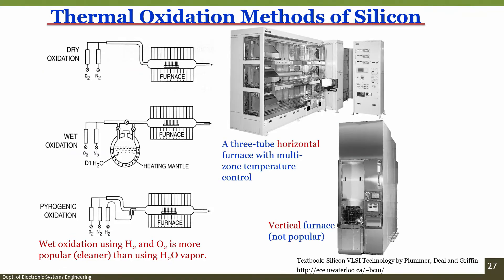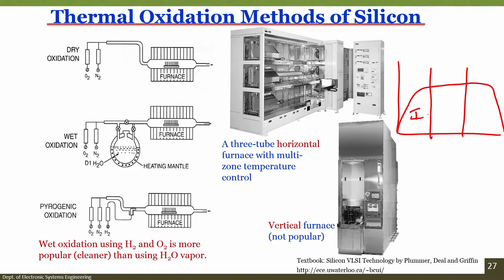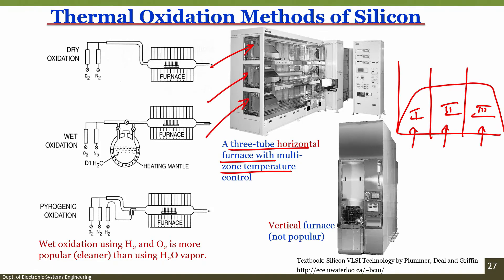The horizontal tube furnace has multiple-zone temperature control. There is a first zone, second zone, and third zone, each independently controlled at a different temperature — this is called a three-tube horizontal tube furnace with multi-zone control. You can load tube one here, tube two here, and tube three here. You can also have a single-tube horizontal tube furnace with multi-zone control, with zones 1, 2, and 3 within the same tube.